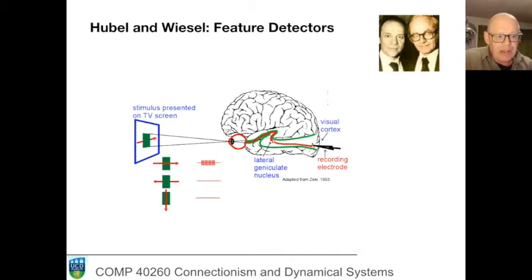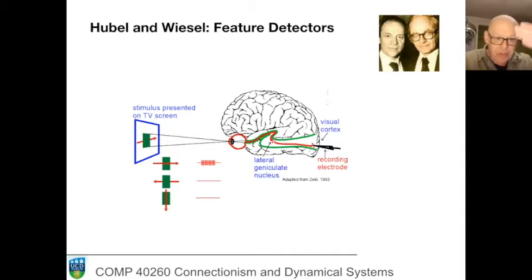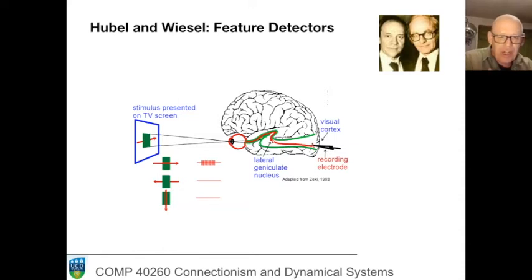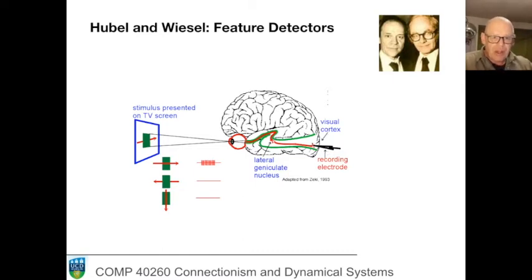The basic idea is this: a cat is exposed to a visual stimulus, which we'll look at in some detail. The stimulus is presented on a screen, and as the stimulus on the screen is changed, Hubel and Wiesel were among the pioneers in making intracellular recordings of individual neurons.